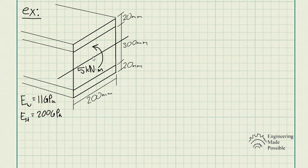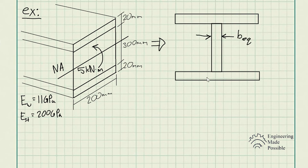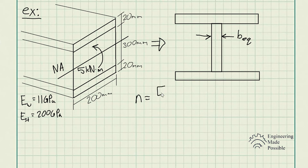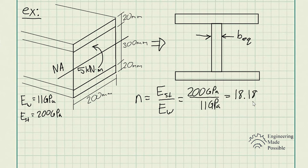Since we have a symmetric cross-sectional area, the neutral axis is at half the total height. We want to transform the wood portion into an equivalent steel portion. The top and bottom steel dimensions stay the same. For the middle portion, we transform the wood into steel and solve for B_equivalent. First, solve for the transformation factor: N = E_steel / E_wood = 200 GPa / 11 GPa = 18.18.